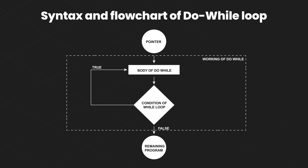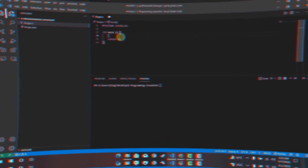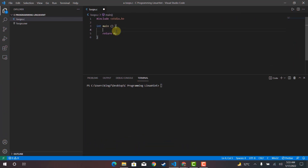There are multiple instances where the do-while loop is more useful and efficient than the while loop, but it's up to the programmer to decide. Imagine a program where you want to greet the user a certain number of times based on input, but even if the user inputs zero, you still greet them once. This is where the do-while loop is the right choice.